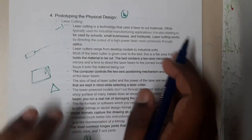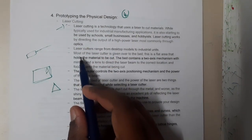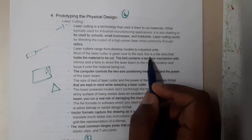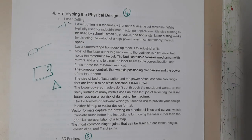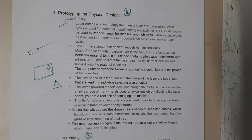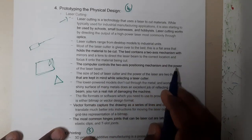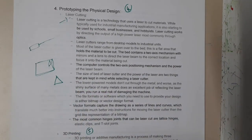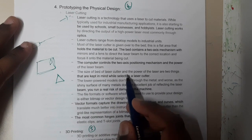Laser cutters range from desktop models to large industrial units. Most laser cutters operate over a flat bed area that holds the material. The computer controls movement along two axes, and based on those movements, the power of the beam is adjusted to cut the material.